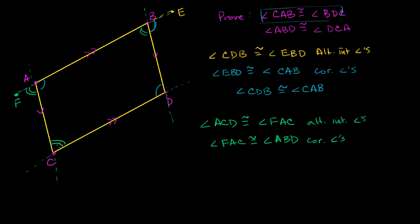Angle FAC is congruent to angle ABD because they are corresponding angles. Since angle ACD is congruent to angle FAC, and angle FAC is congruent to angle ABD, these two are congruent to each other. So we've shown that if we have a parallelogram, the opposite angles are going to be congruent.